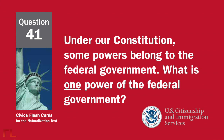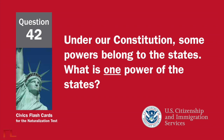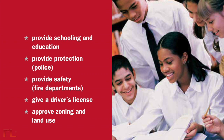Under our Constitution, some powers belong to the federal government. What is one power of the federal government? To print money, to declare war, to create an army, or to make treaties. Under our Constitution, some powers belong to the states. What is one power of the states? Provide schooling and education, provide protection, police, provide safety, fire departments, give a driver's license, or approve zoning and land use.